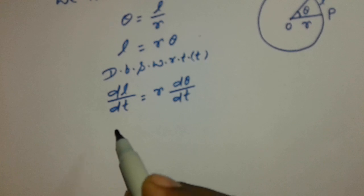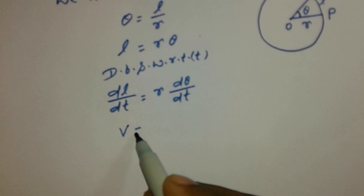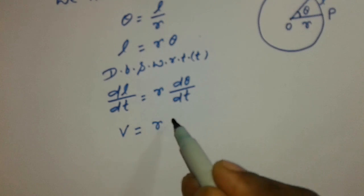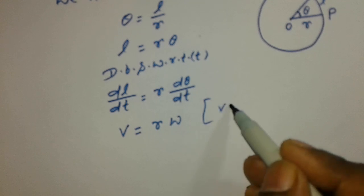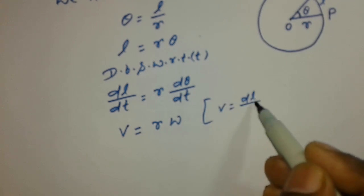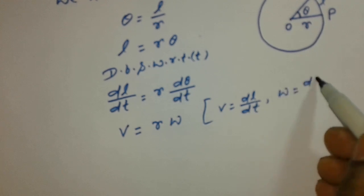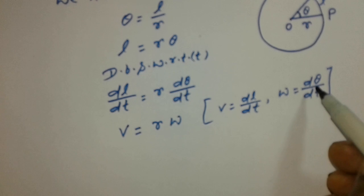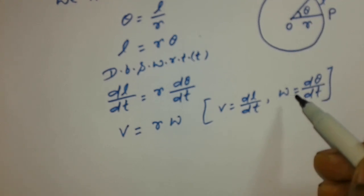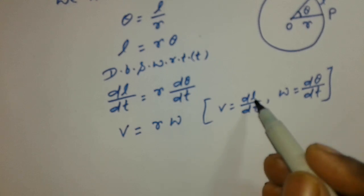So we can write dL by dt, this is V. V is equal to R and d theta by dt, that is Omega. Here V is equal to dL by dt and Omega is d theta by dt. So rate of change of angular displacement is called angular velocity, and rate of change of linear displacement by time, this is called linear velocity.